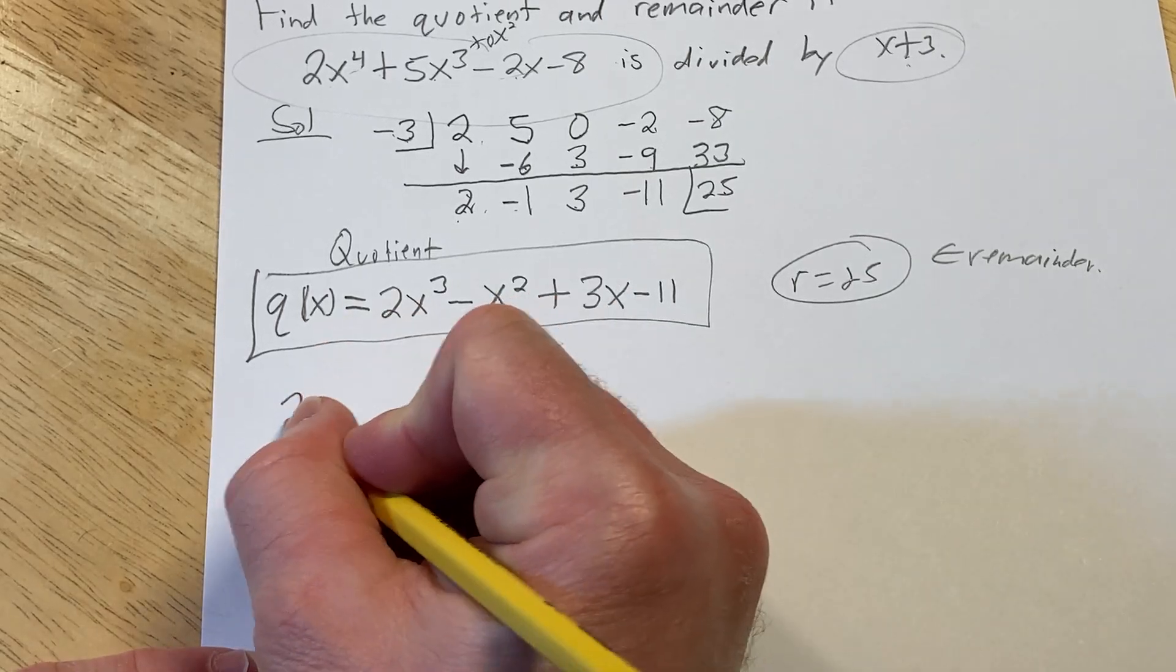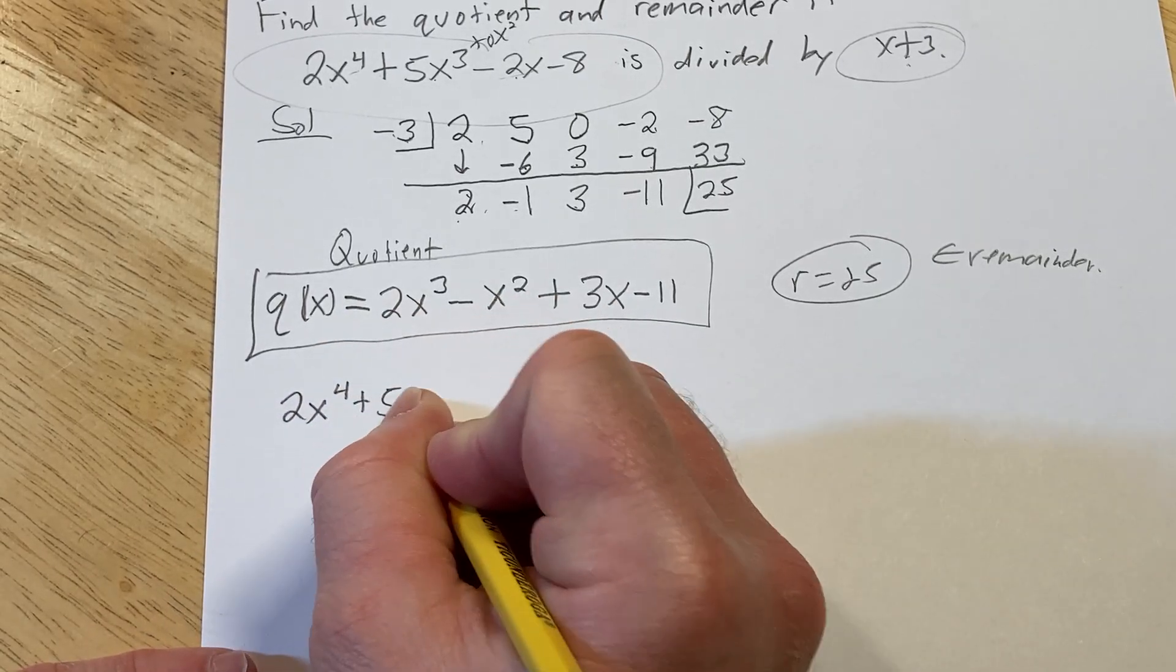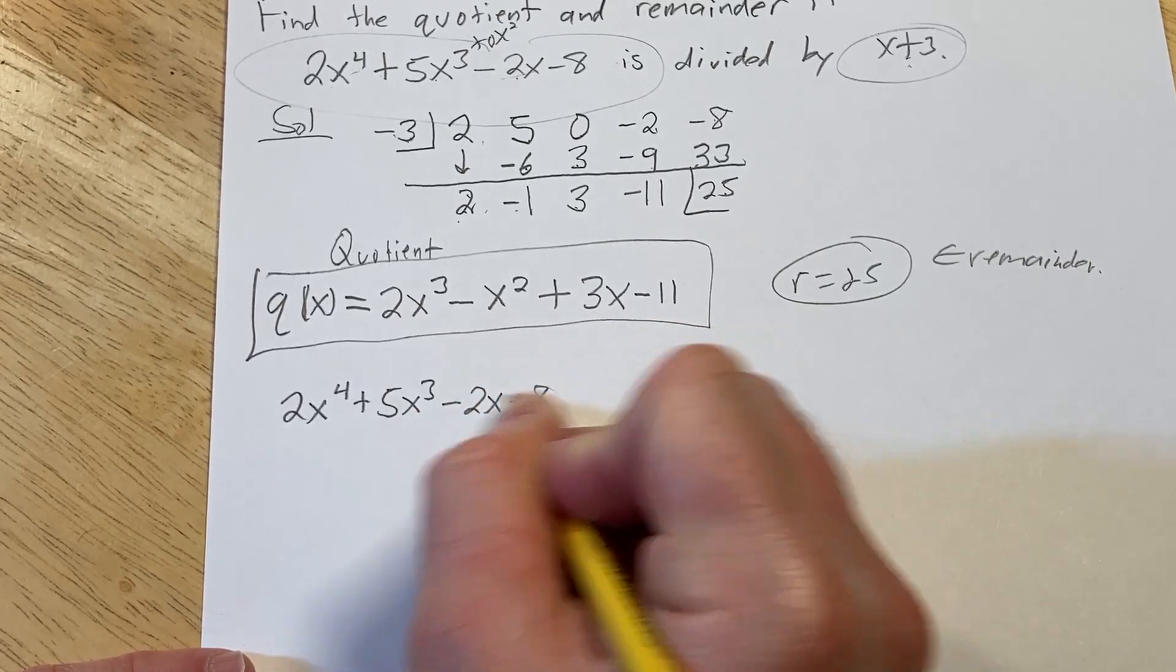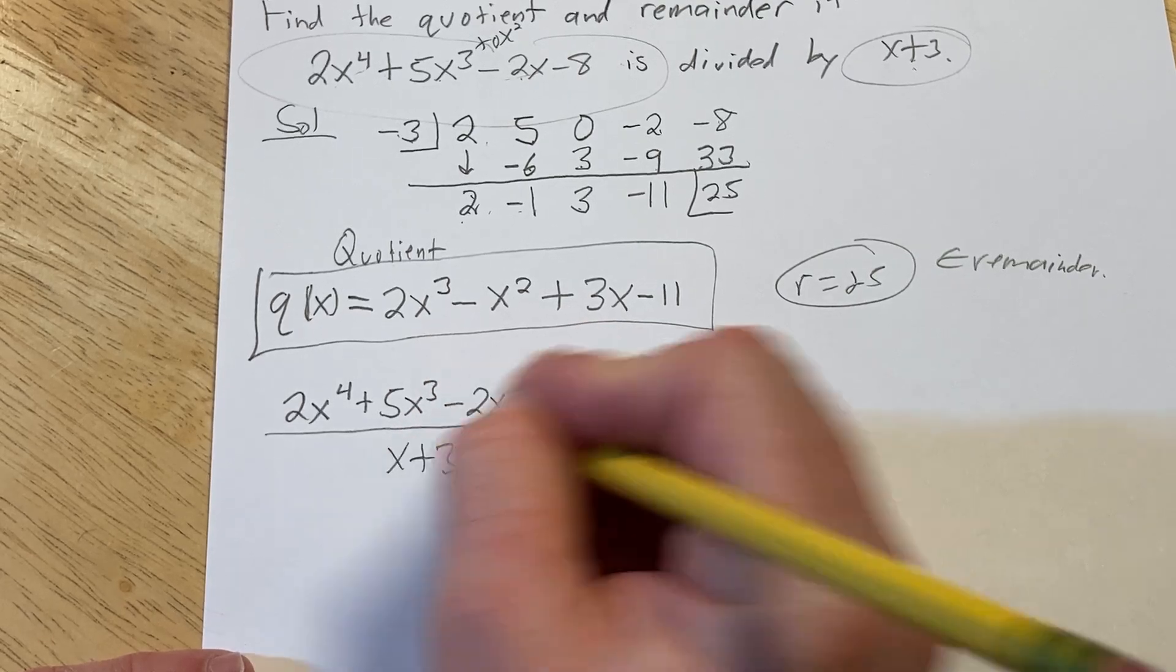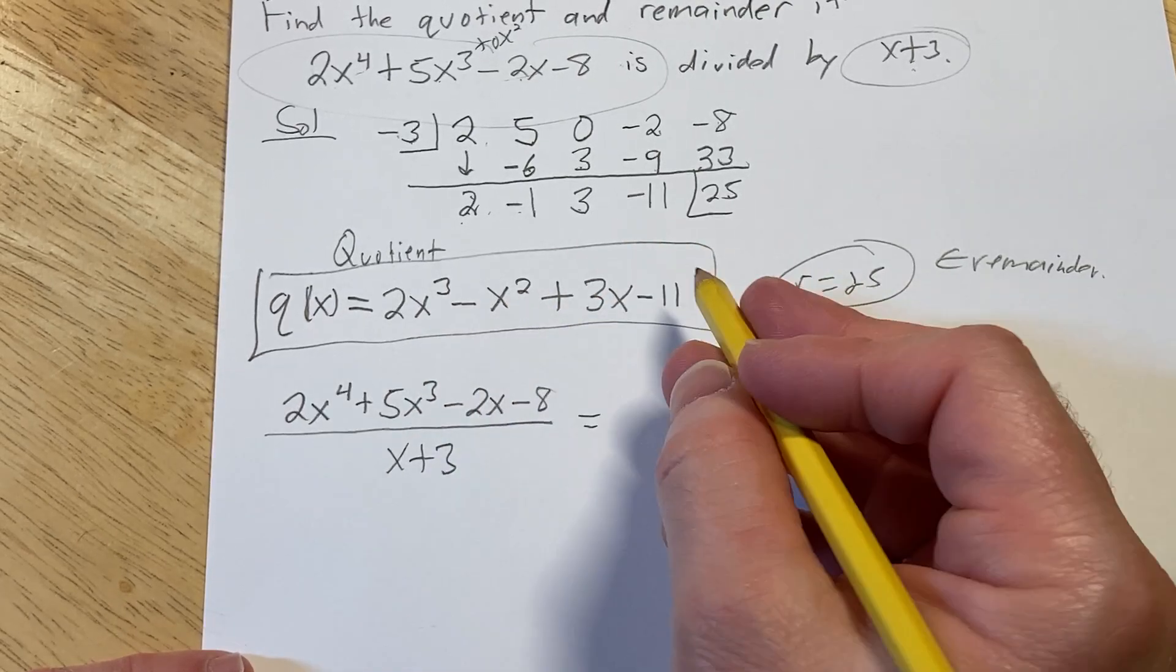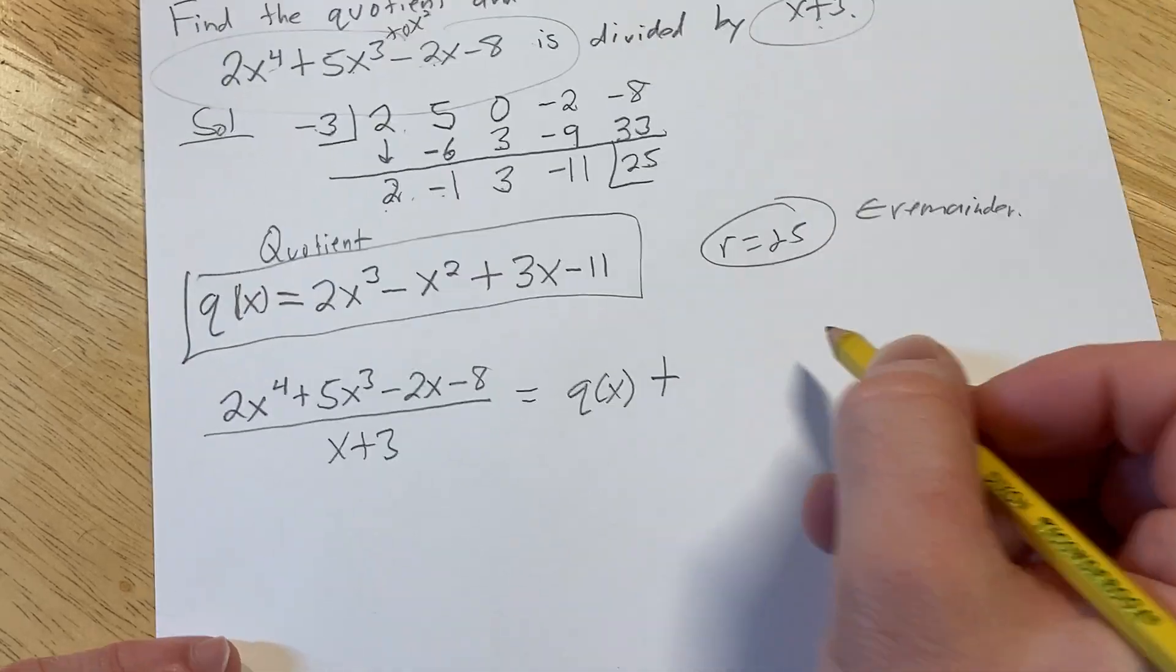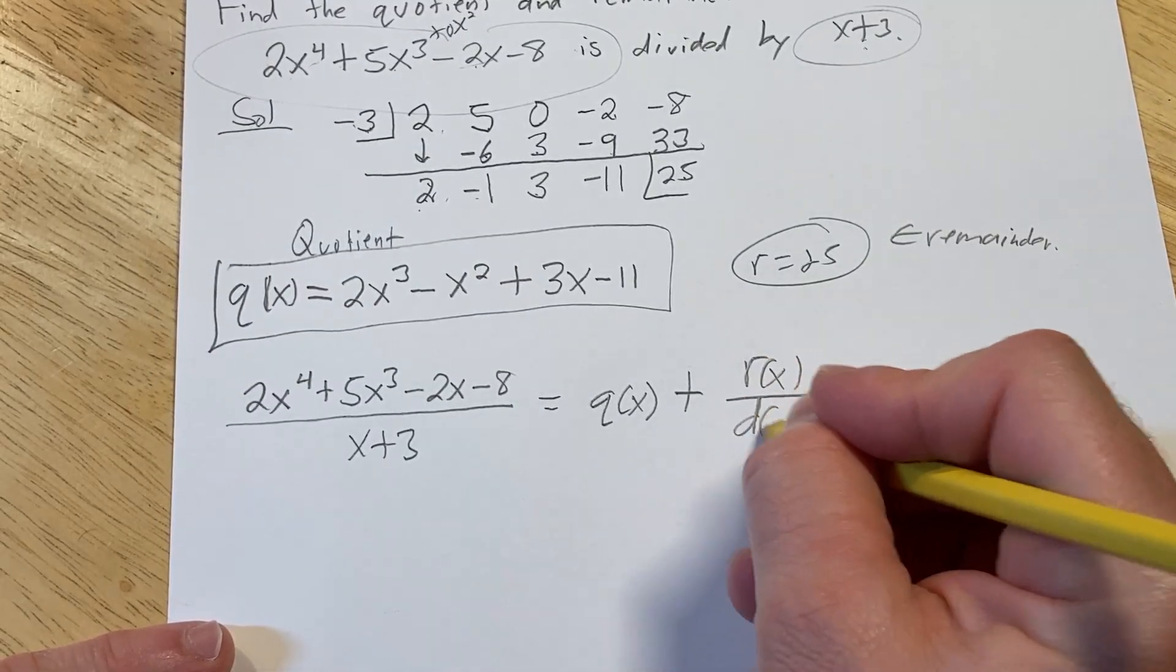So let's say we have this divided by x plus 3. So this is 2x to the 4th plus 5x cubed minus 2x minus 8. And all of this is being divided by x plus 3. Okay, so this is equal to the quotient. So it's q of x plus the remainder, r of x, over the divisor, which we can call d of x.